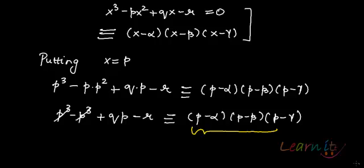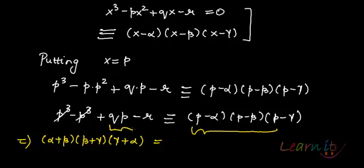So this is the expression. That means the expression we were looking for, which is alpha plus beta, times beta plus gamma, times gamma plus alpha, actually equals nothing else but pq minus r. So the answer is that the symmetric function alpha plus beta, times beta plus gamma, times gamma plus alpha equals pq minus r.